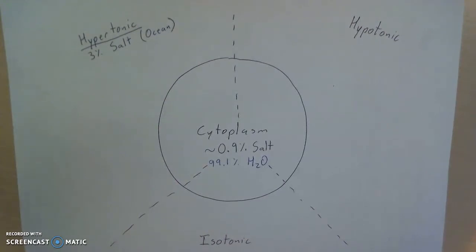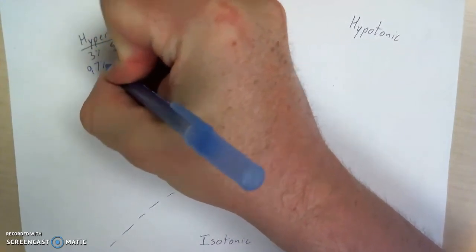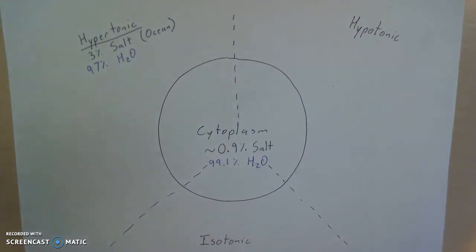Again, if we know that the ocean is 3% salt, well what's the rest? Pretty much the rest is water. So it's about 97% water. I like to think of solutions in this way because it allows me to make a simple comparison between the environment, 97% water, and the cytoplasm, 99% water. I can quite simply ask myself, where is the concentration of water greater? In this instance, it's greater inside the cell.